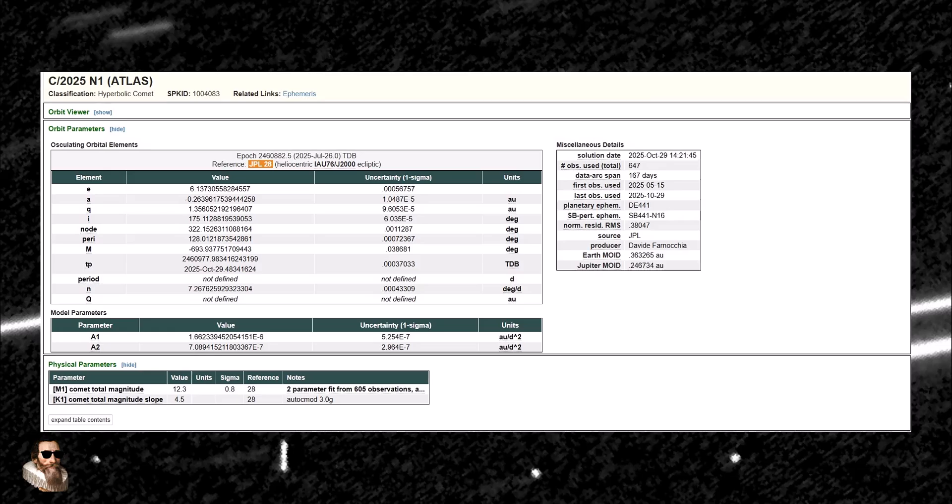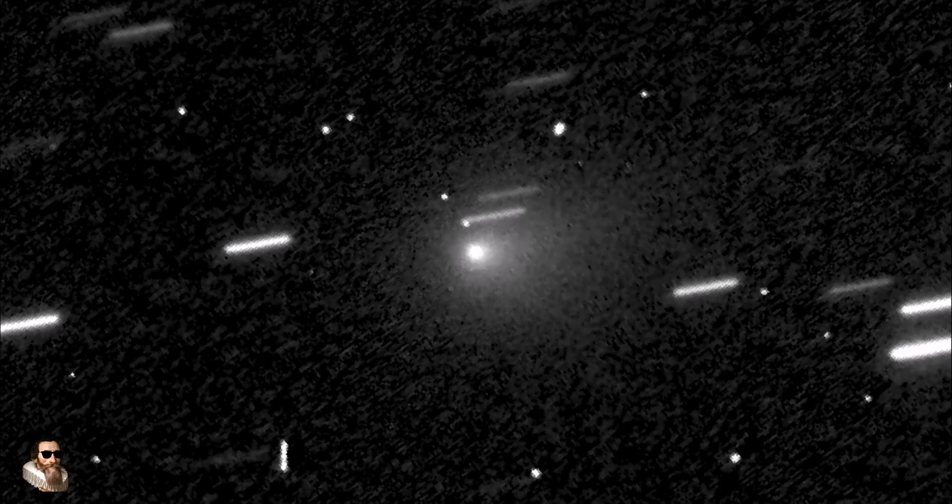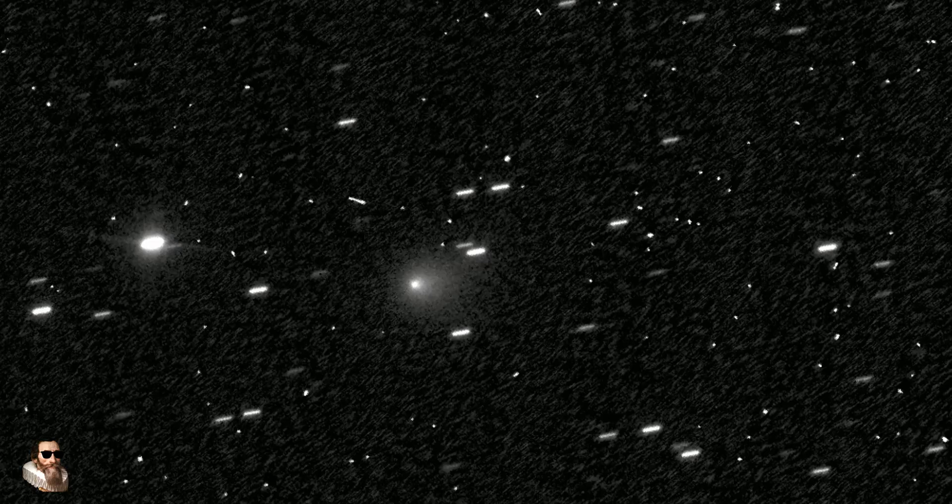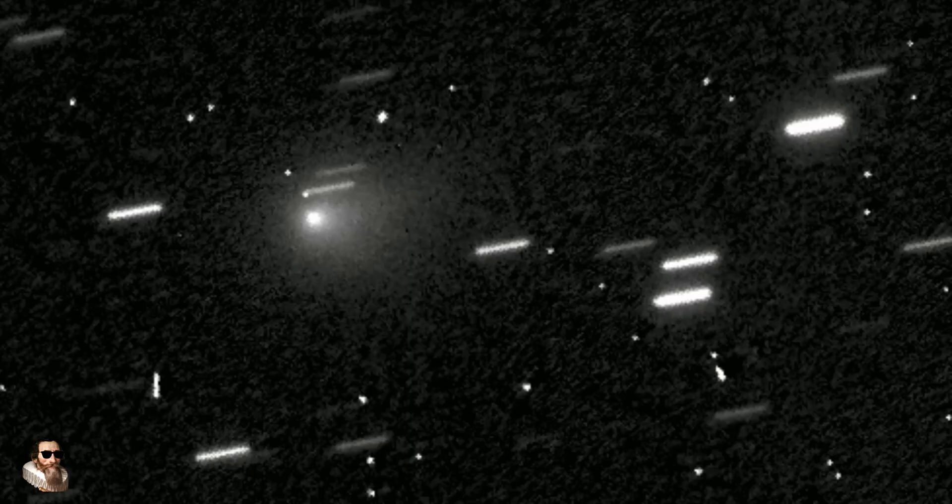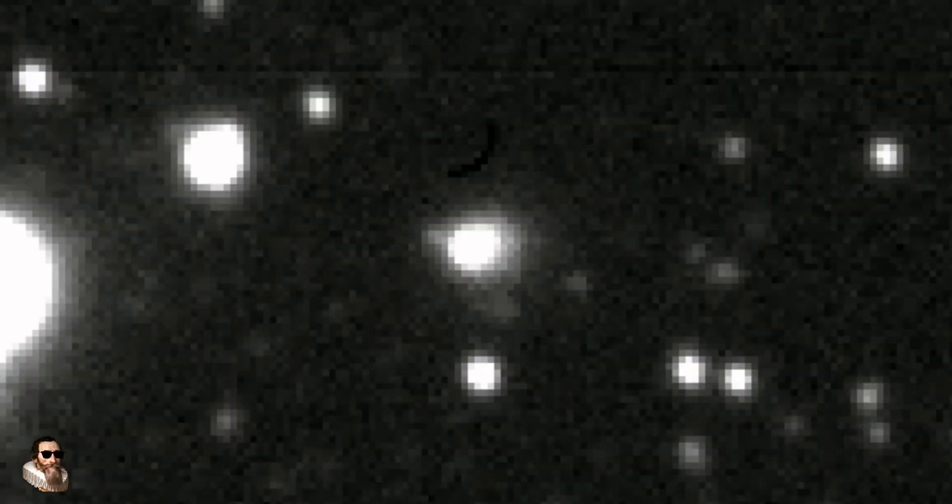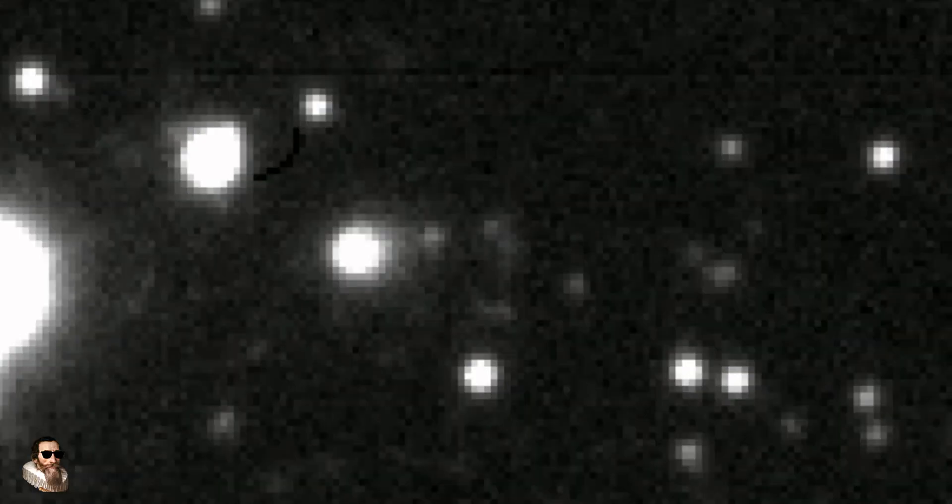And this is a jaw-dropping moment. Mainstream astronomy will tell you that for a comet, the usual explanation is outgassing, jets of sublimated gas acting like thrusters. But the scale here implies, if outgassing were responsible,